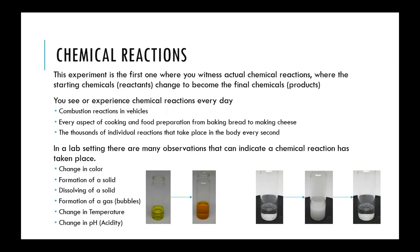A number of things can be inferred from chemical reactions — there are visual cues you can see to determine if a chemical reaction has taken place. Some of these things are a change in color, such as going from yellow to orange. The formation of a solid: you mix two liquids together and get a precipitate. Or the dissolving of a solid: you add a liquid and the solid completely goes away.